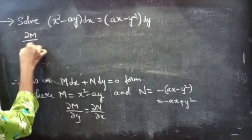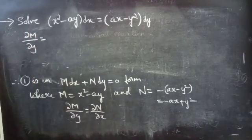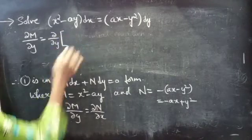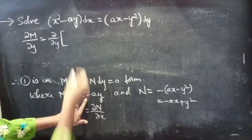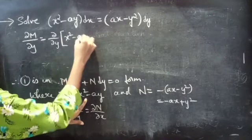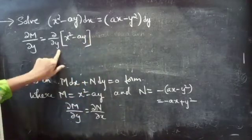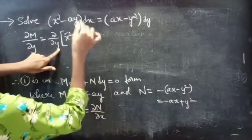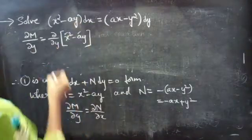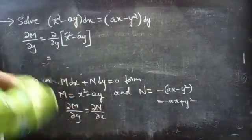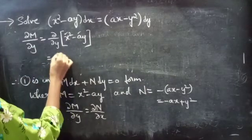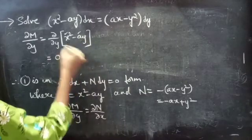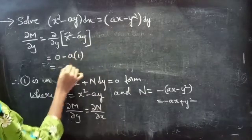The partial derivative of M with respect to y is ∂/∂y of x squared minus ay. Here we treat x and a as constants. So the derivative of x squared with respect to y is 0, minus a into the derivative of y with respect to y is 1. This equals minus a.